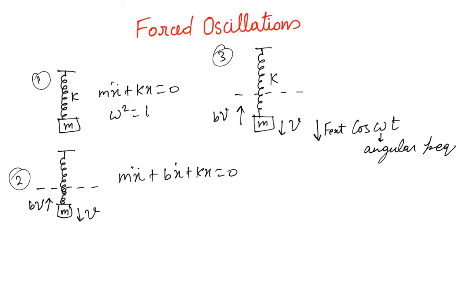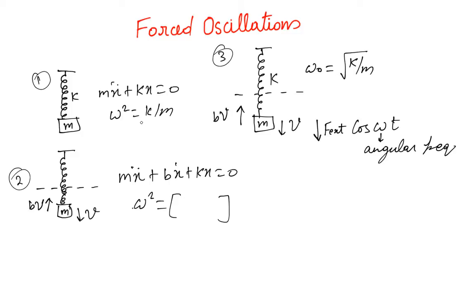In previous cases we used ω to express √(k/m), but now we reserve ω for the external force frequency. Instead, we define ω₀ as the natural frequency of the undamped oscillator, so ω₀ = √(k/m). This means ω₀ is the frequency the oscillator would have if there were no damping BV and no external force.